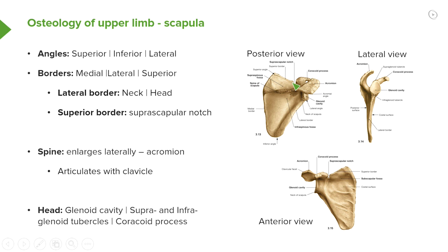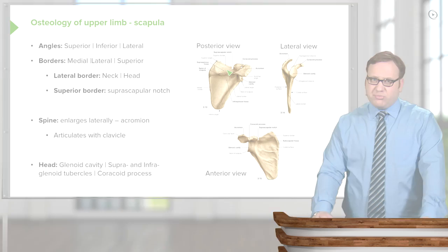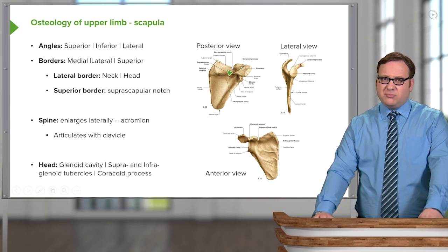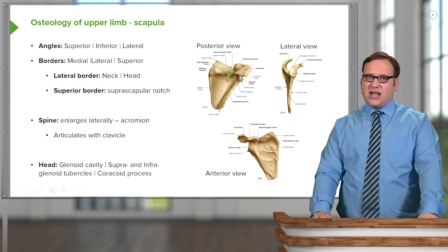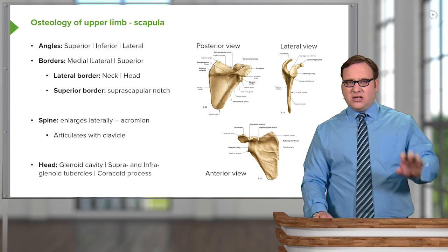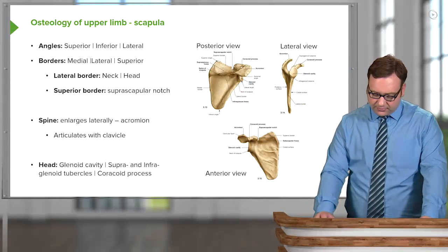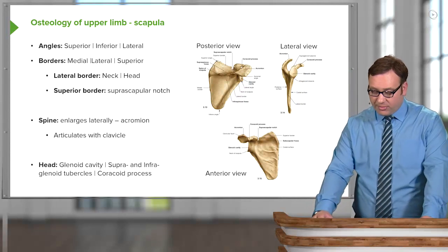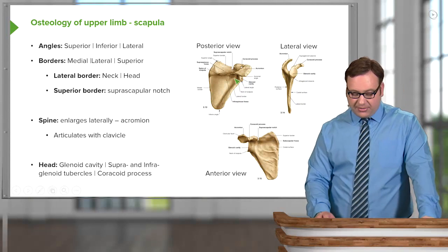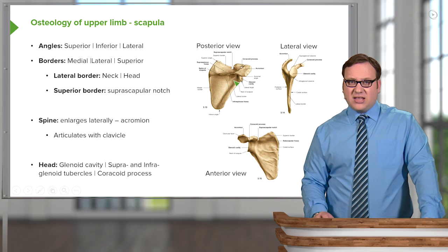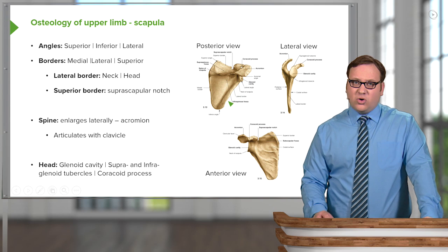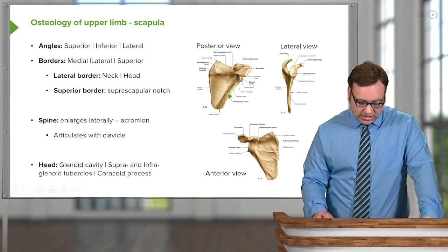On the superior border there is an important feature known as the suprascapular notch. The suprascapular notch is important as it allows a blood vessel to pass through, or over the top of, the scapula — we'll come to that in later lectures.